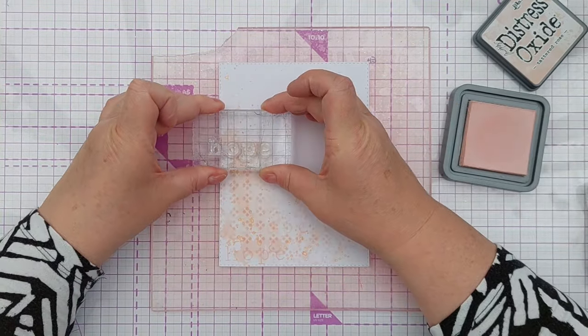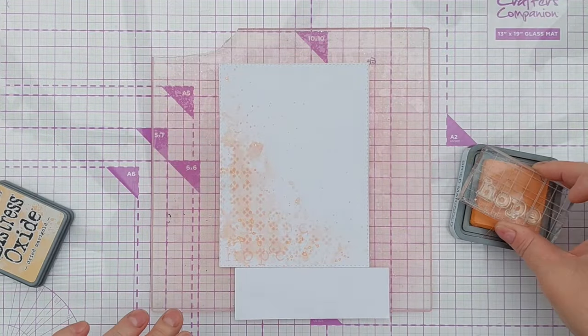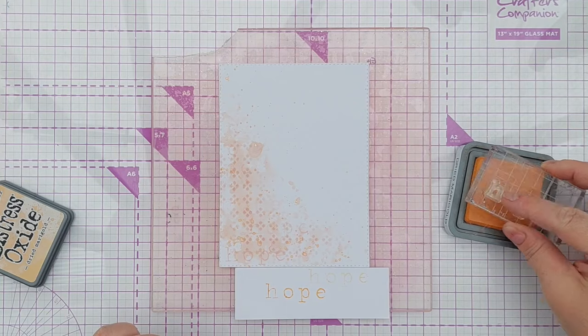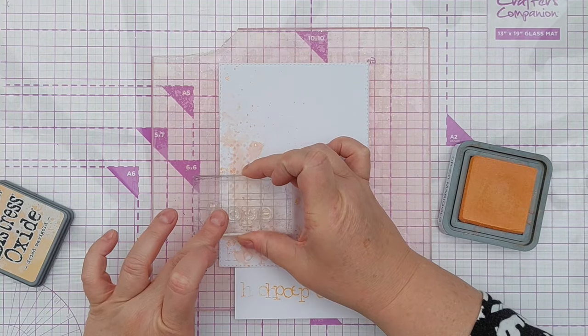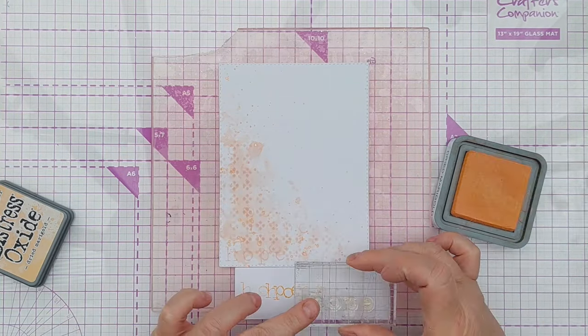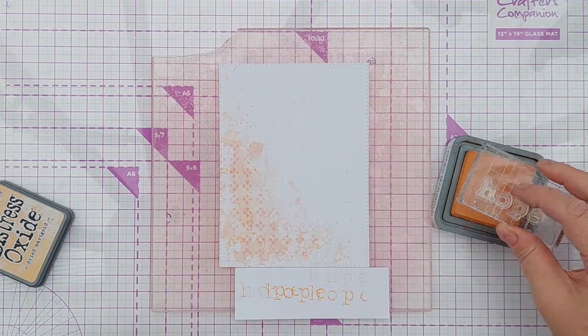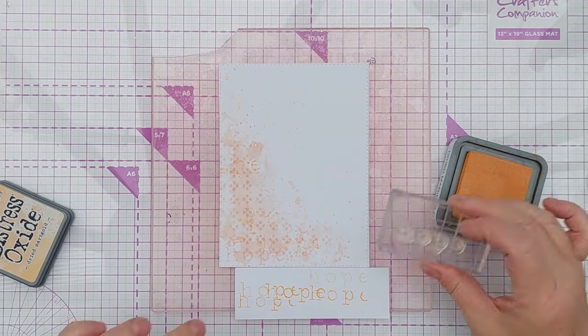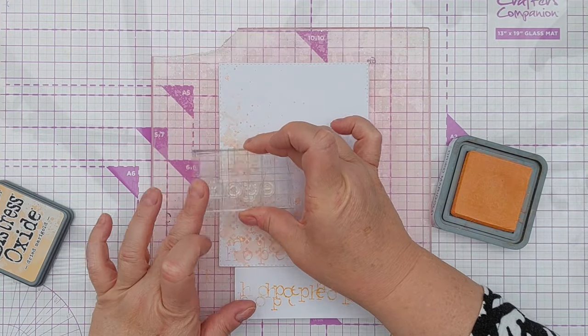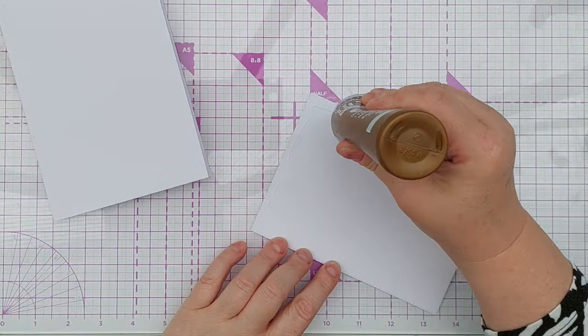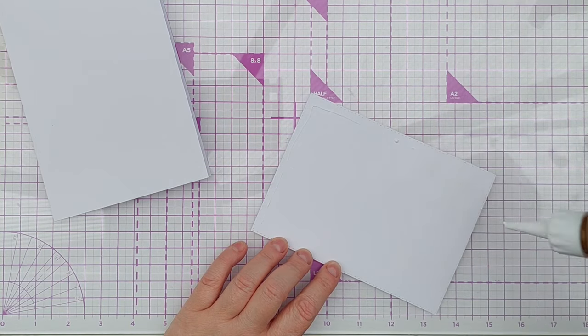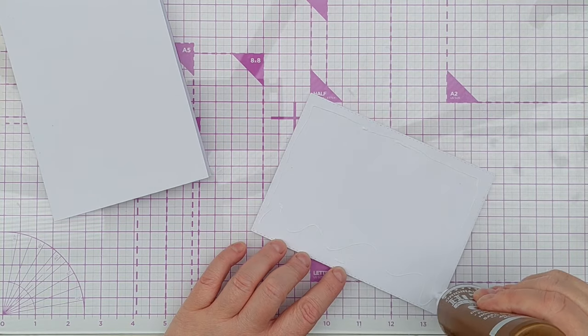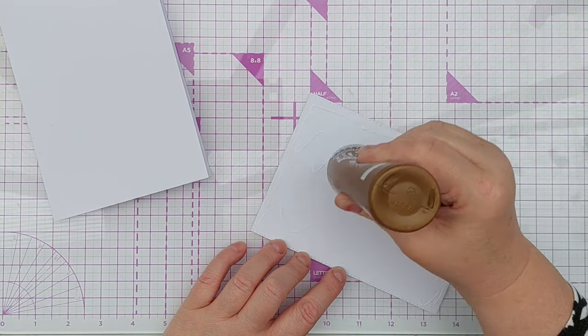I wanted this card to be a hopeful, we're here for you type card but I didn't want it to be too obvious. I wanted the hope to be part of the background pattern so I stamped it first in tattered rose which is quite light and then I brought in the dried marigold and only stamped a couple of dried marigold hopes at full strength. The rest I did second generation stamping so that it wasn't too bold.